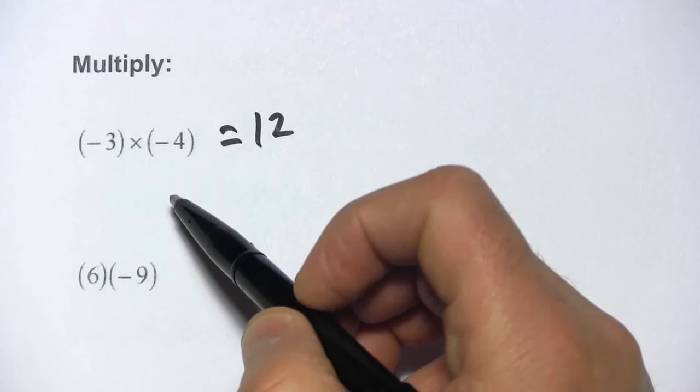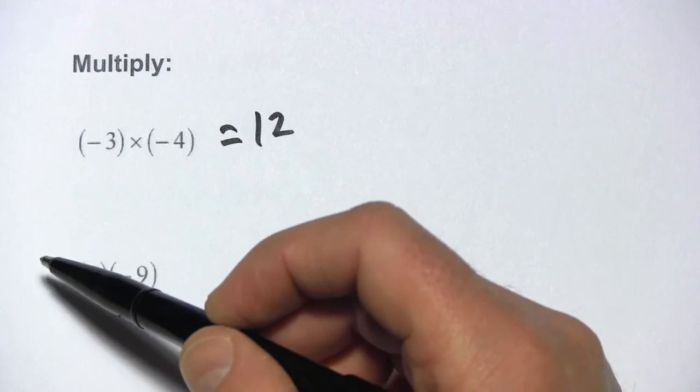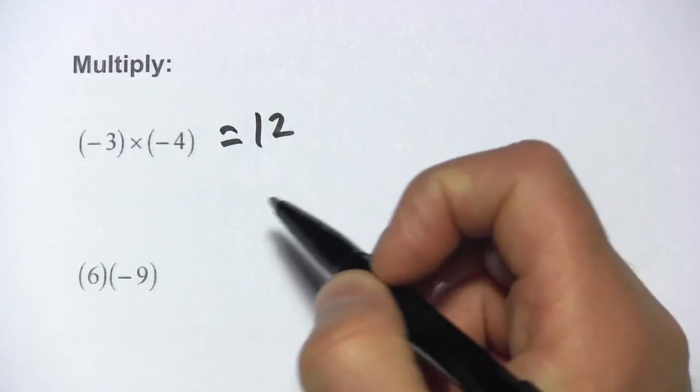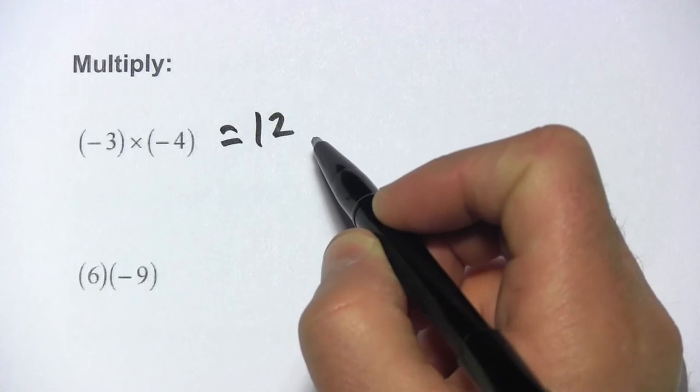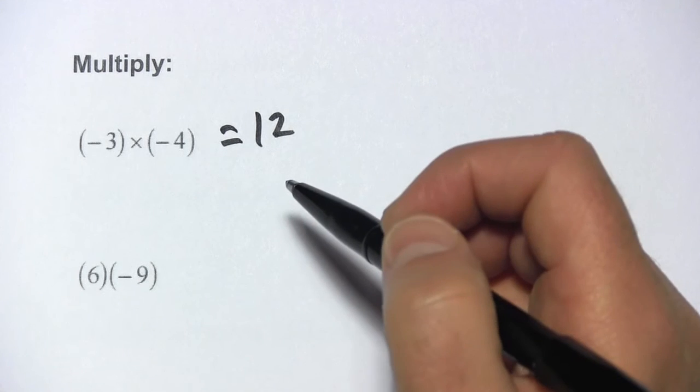If you have an even number of negative signs in any multiplication problem, if you had a hundred numbers to multiply together and there were 98 negative signs, it would end up being a positive number. If you had an odd number of negative signs, it's going to be a negative number.